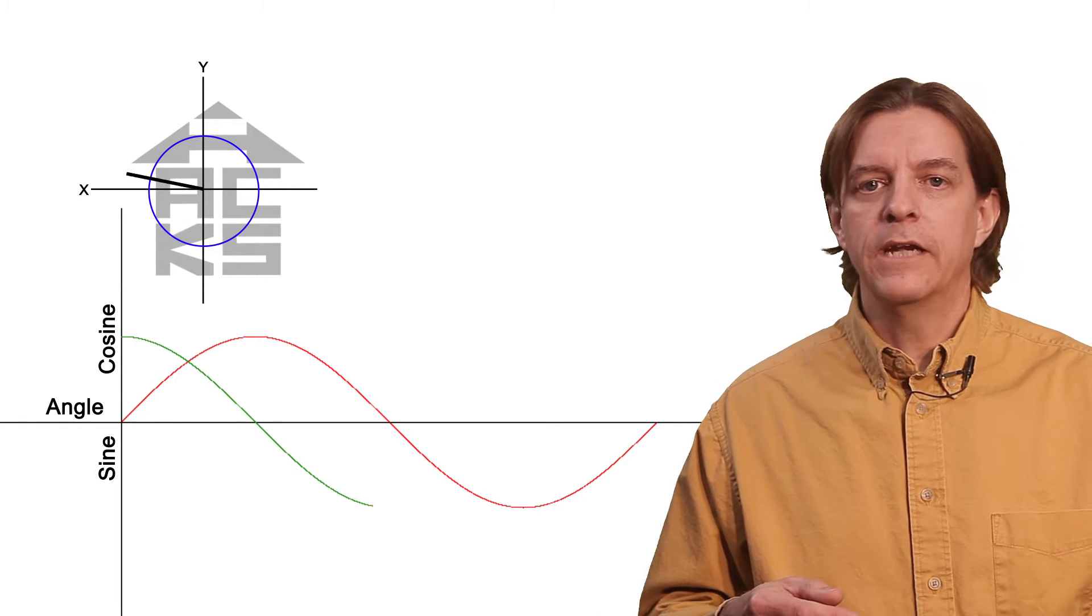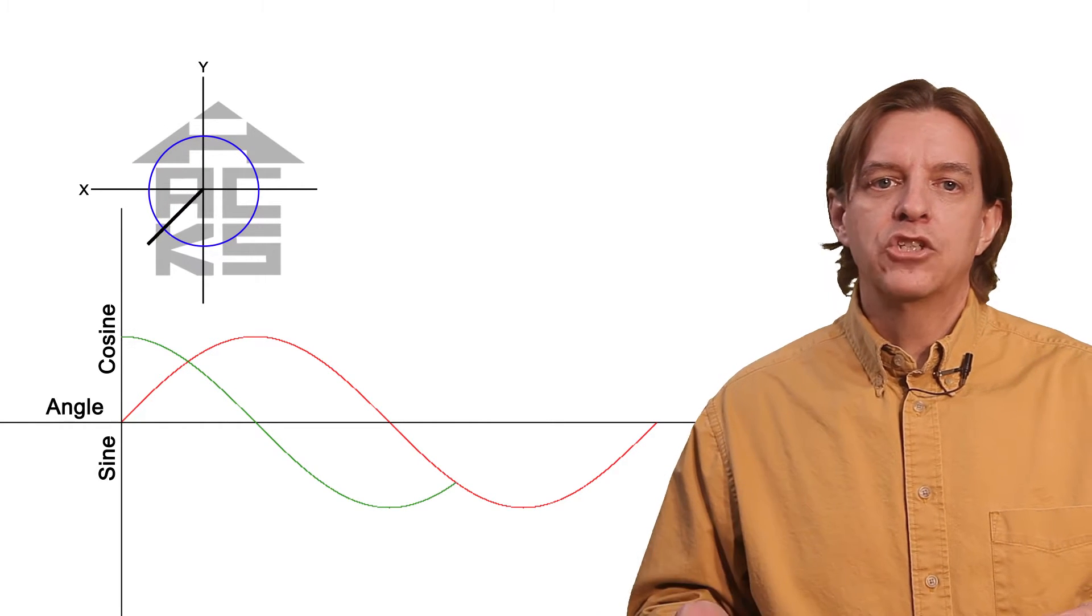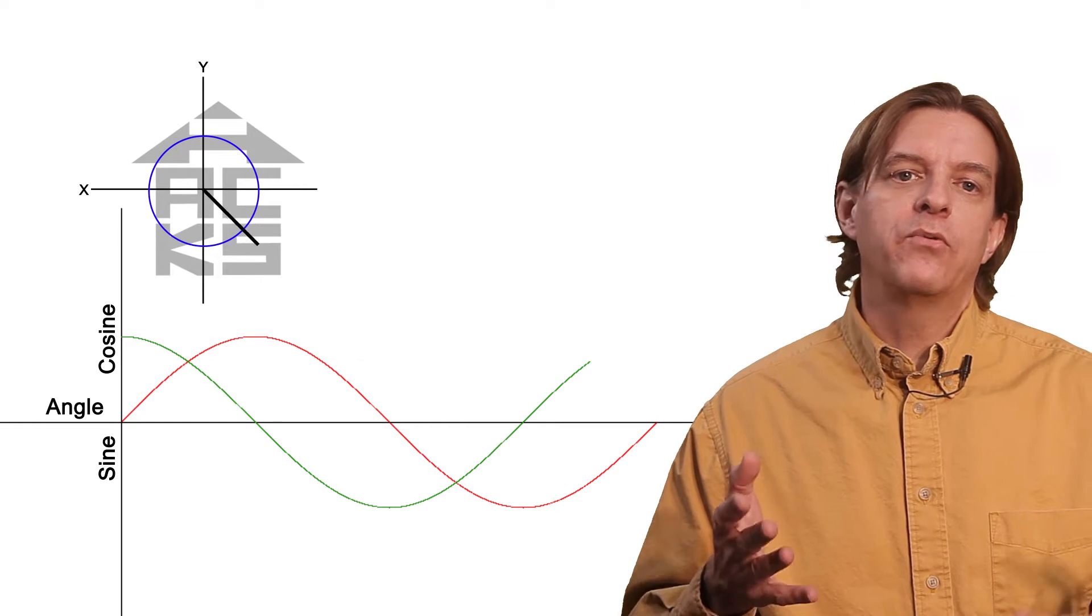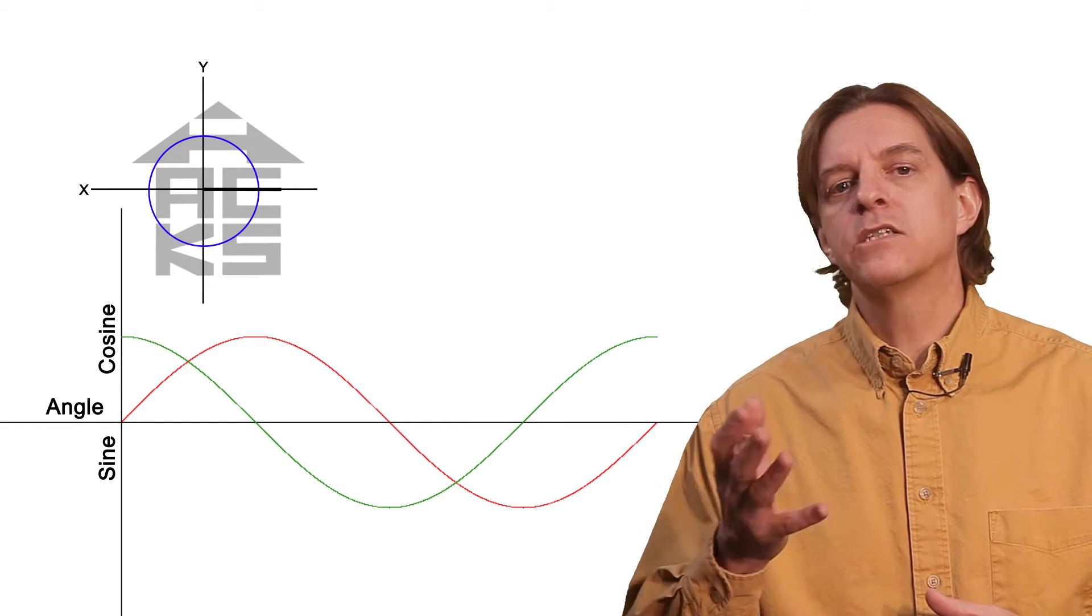Minus 1 at 180, back up to 0 at 270, and finally 1 at 360 degrees, the place we started.